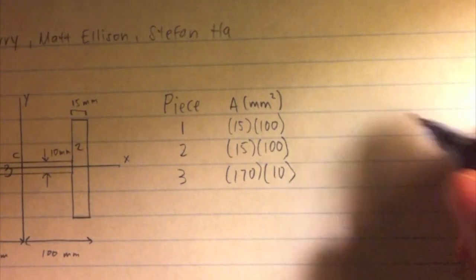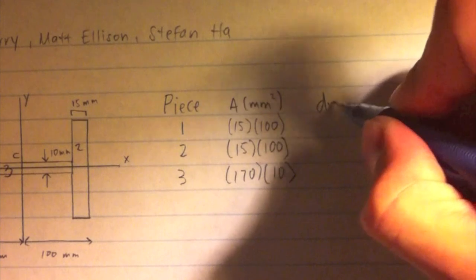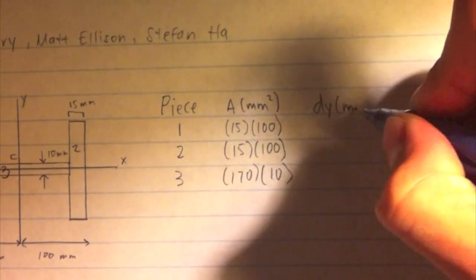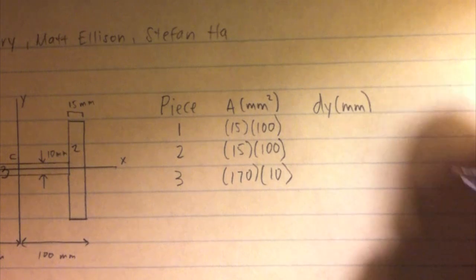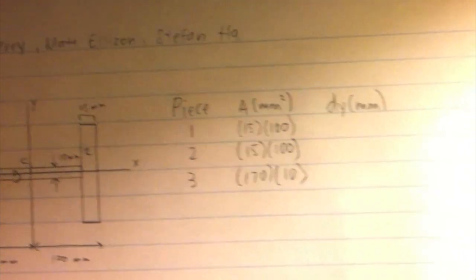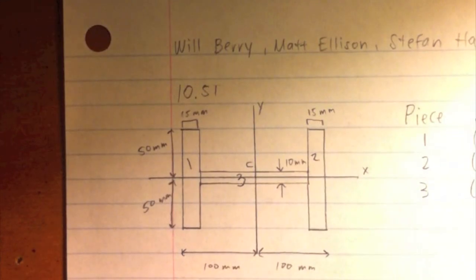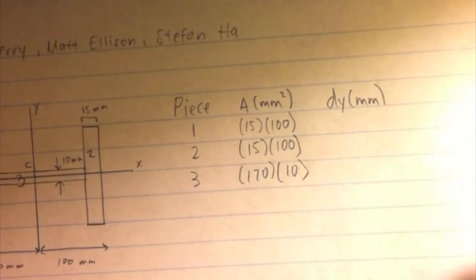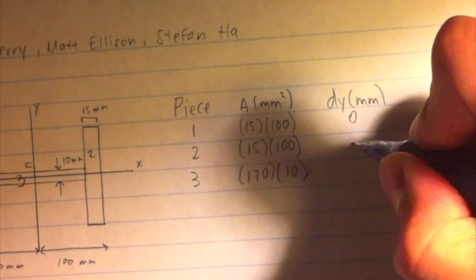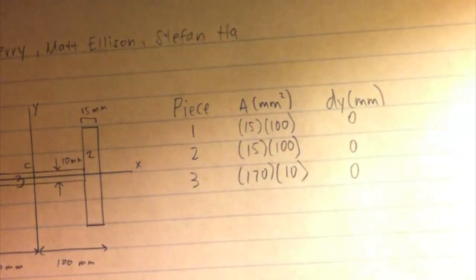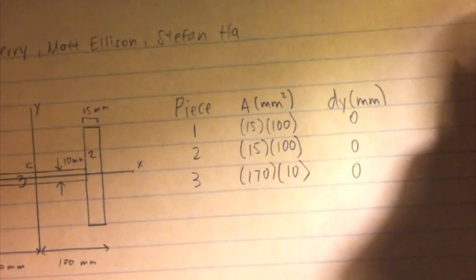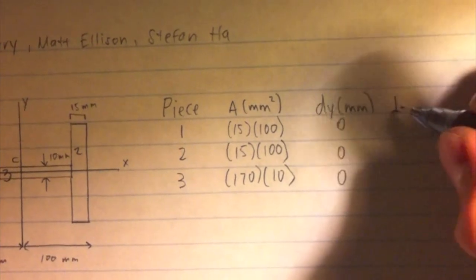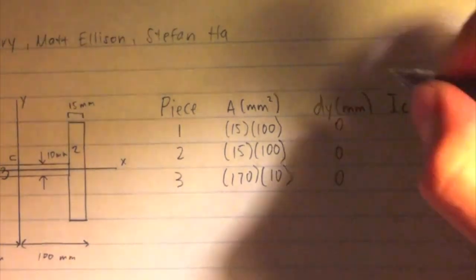Next, we are going to move on to the distance dy from the centroid of each piece to the x-axis, which we are trying to find the moment of inertia around. However, if you look at the free-body diagram, you can see that the distance from the centroid of each piece to the x-axis is zero, as written on the page, so we will not need to apply the parallel axis theorem.